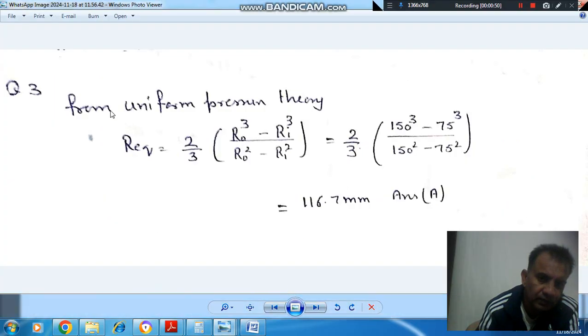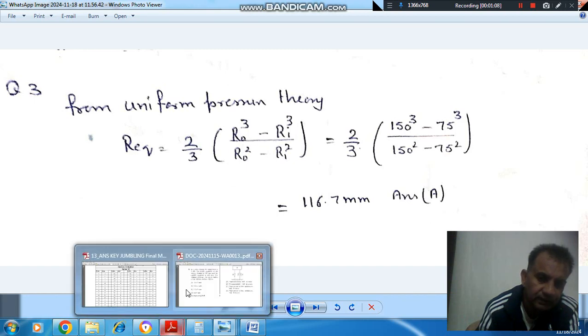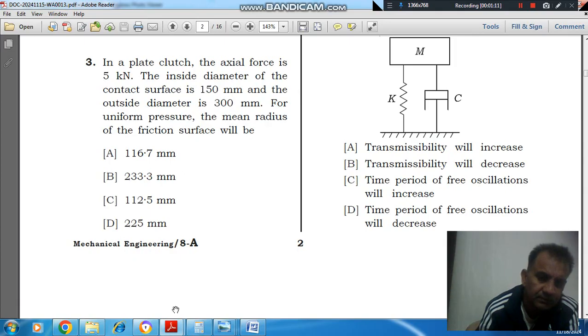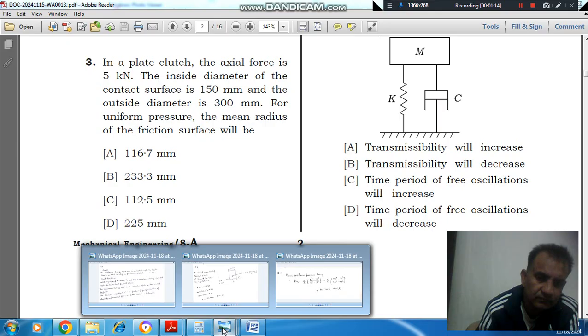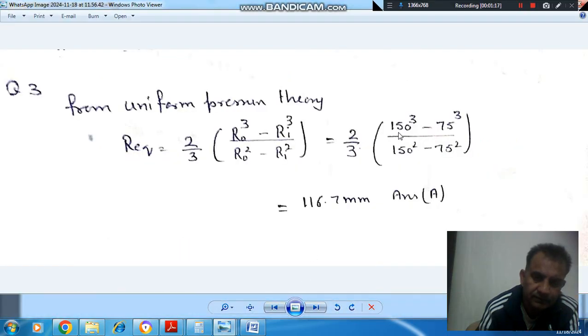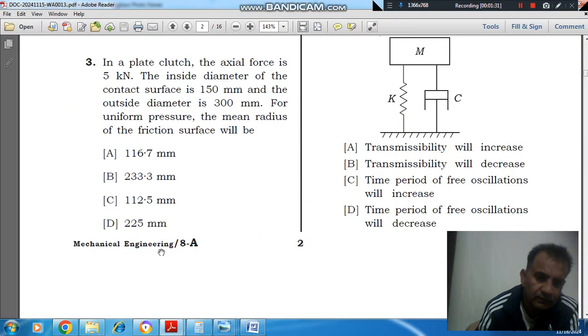So, we know that for uniform pressure theory, R equivalent is 2/3 bracket (R0³ - Ri³) divided by (R0² - Ri²), where R0 is outer radius and Ri is inner radius. As diameter is given, that is 150 mm and 300 mm, so radius is, outer radius will be 150 mm and inner radius 75 mm. So, answer is 116.7 mm or option A is the correct answer.